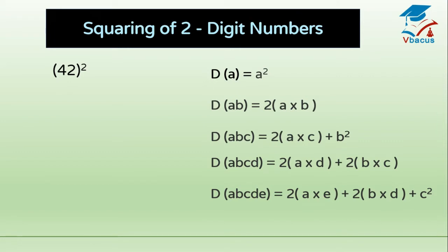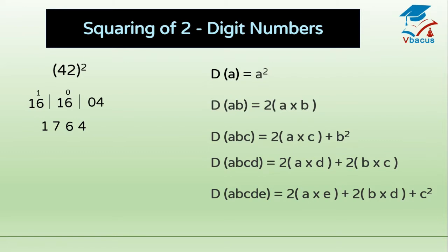Squaring of 2-digit numbers. Find the square of 42. Take the unit digit 2 — square of 2 is 4. Then multiply both digits: 4 twos are 8, and double of 8 is 16. Now square of the tens digit — that is 16. Write 4 and 0 will carry to 16. 16 plus 0 is 16 — write 6, and 1 carries over to 16 again. 16 plus 1 is 17. Your answer is 1764.